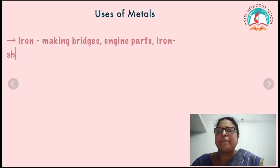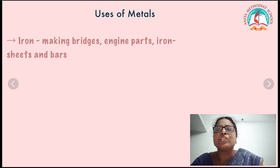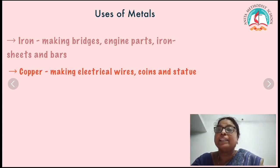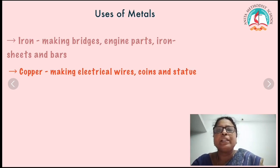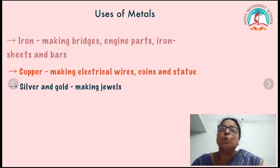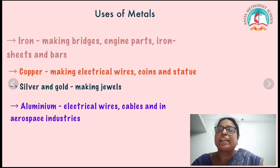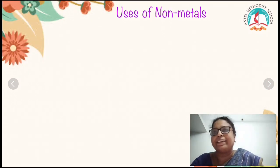Uses of metals: iron is used for making bridges, engine parts, iron sheets and bars. Copper is used for making electrical wires, coins, and statues. Silver and gold are used for making jewels. Aluminium is used for electrical wires, cables, and in aerospace industries.